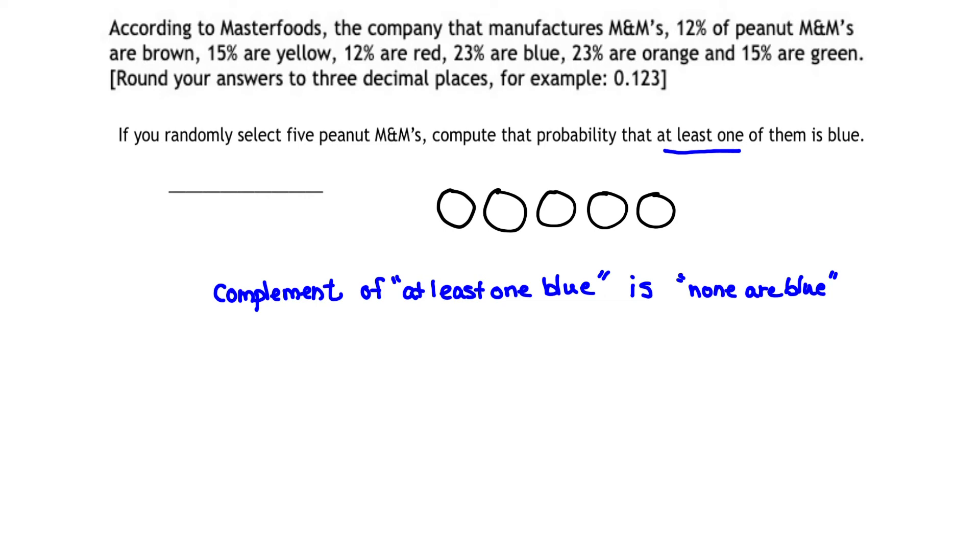Once we have that idea of complement, now we have a starting point because we know formulas for complements, right? We know how to get the probability of a complement. We also know how to get the probability that none of those five M&Ms are blue because we just did that in a previous problem.